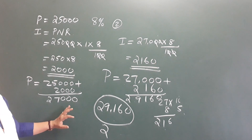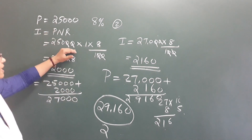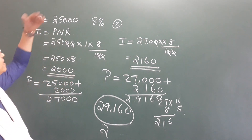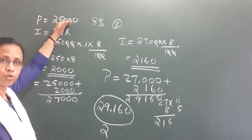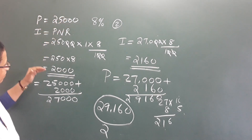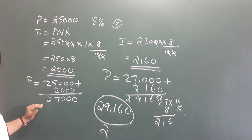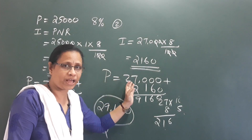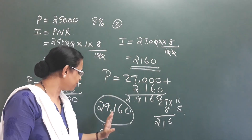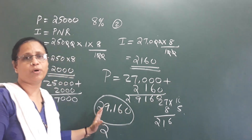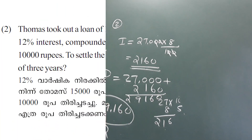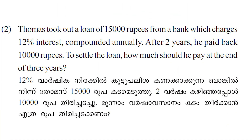In compound interest, we get the interest in the first year, add it to the principal amount, then calculate the next year's interest on that new principal amount. This is the compound interest method.